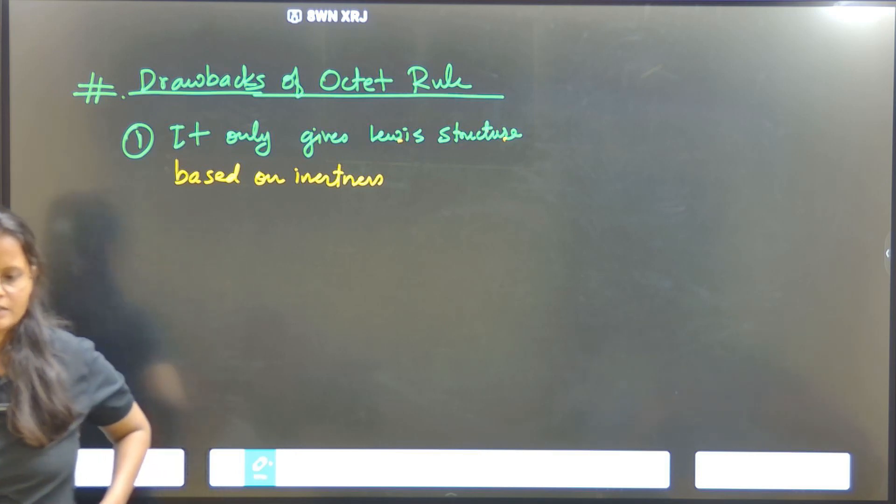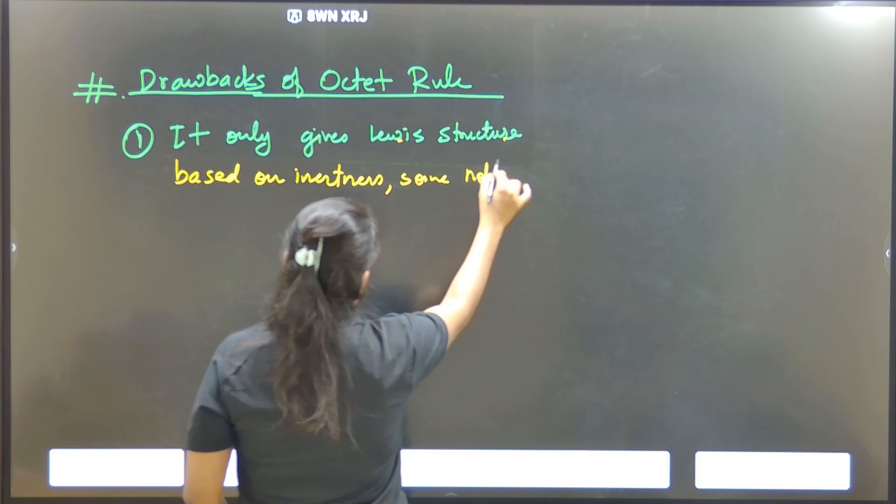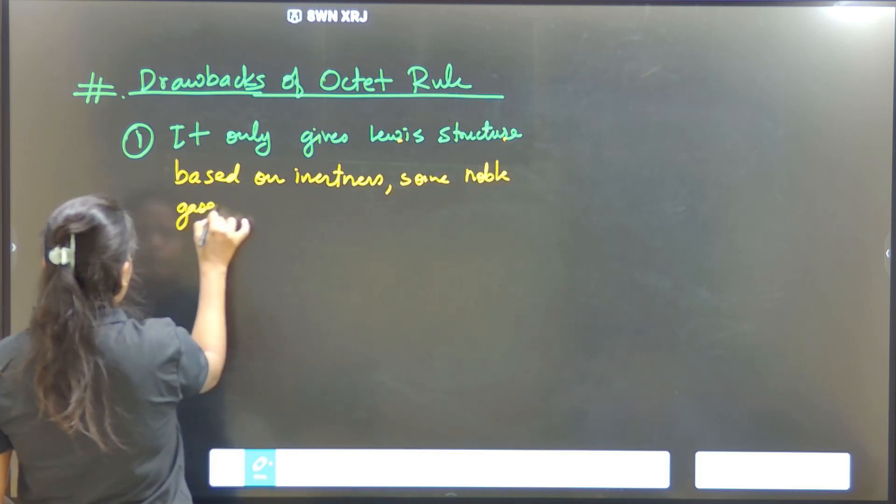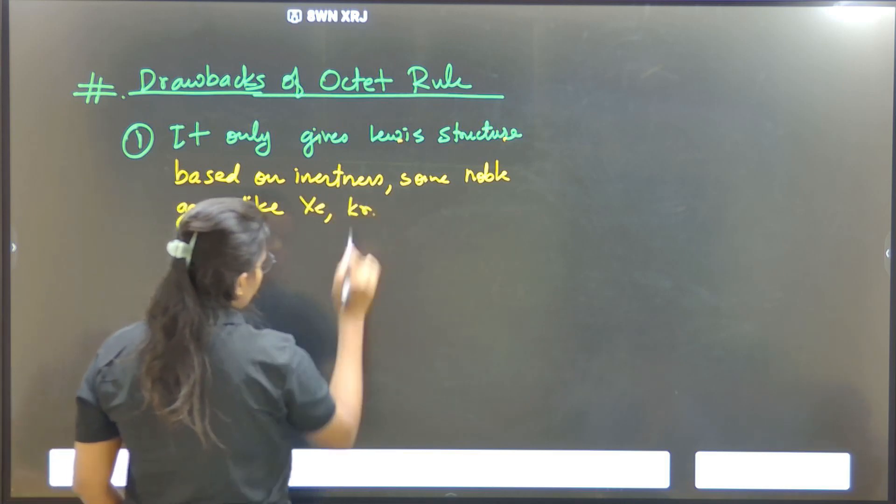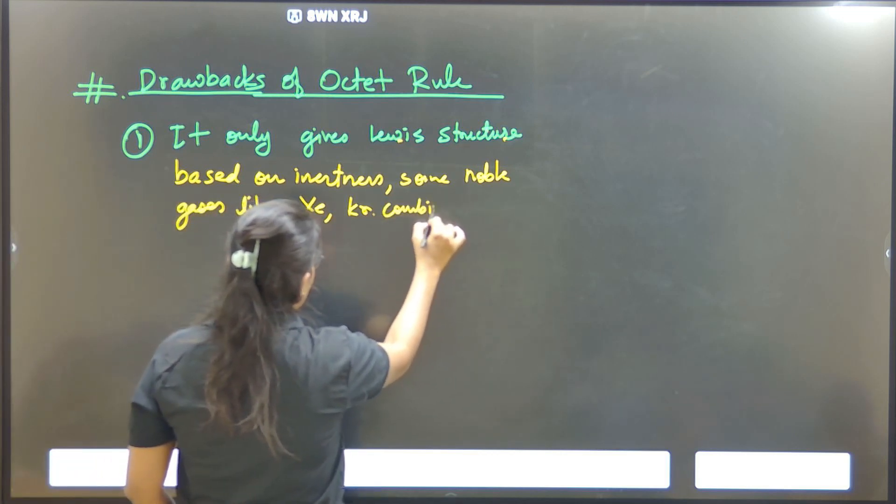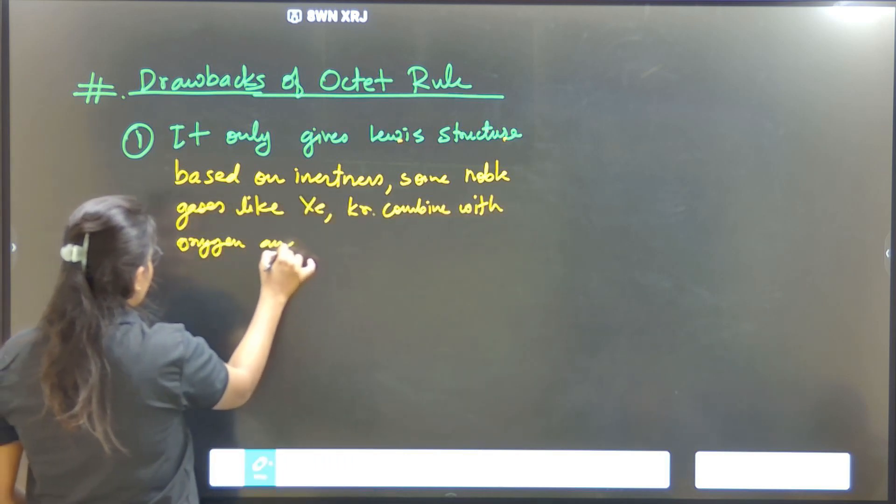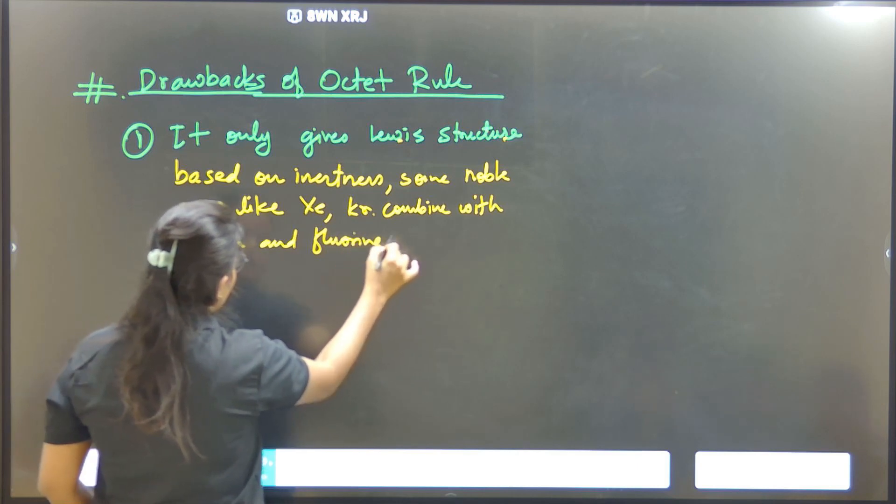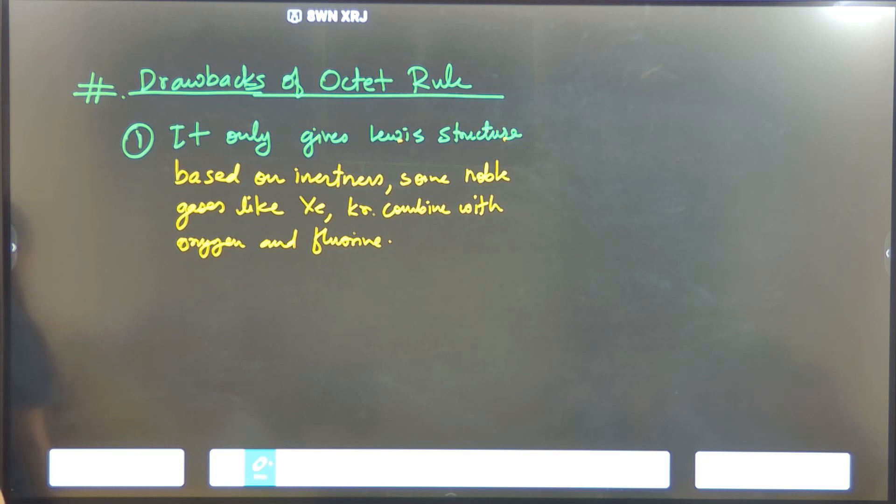Some noble gases like xenon and krypton combine with oxygen and fluorine. How did we say that inert gas react? But inert gases do react.